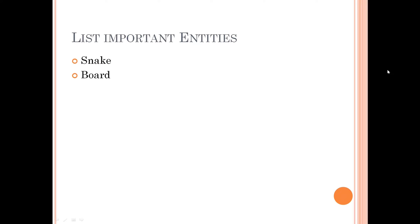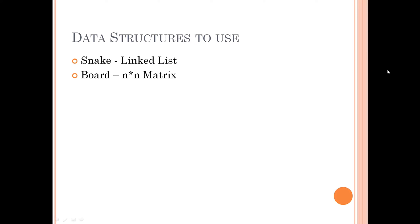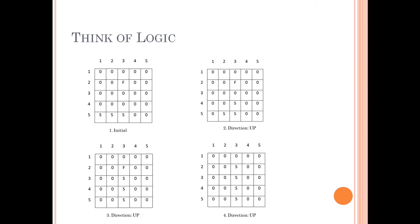Next is listing important entities. Two entities I can think of are most important: one is snake and the second is board. For data structures, snake can be represented by a linked list, because snake is a chain of cells on a board and I can reach from head to tail using a linked list. For the board I will be using an N×N matrix.